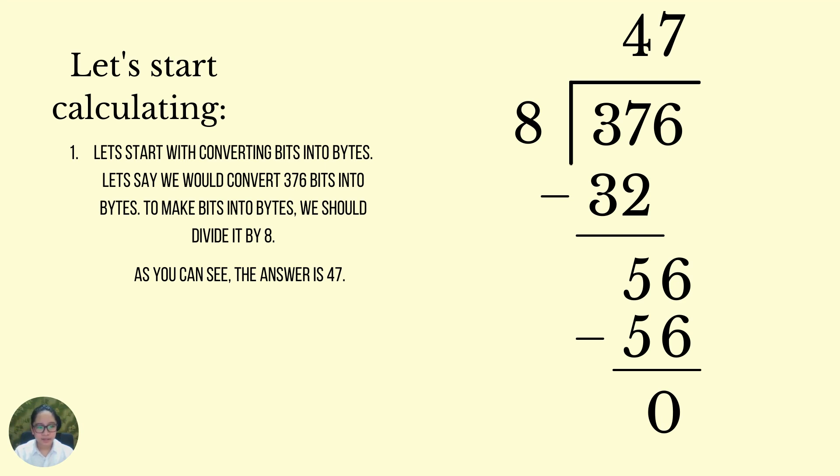Let's start calculating. Let's start with converting bits into bytes. Let's say we would convert 376 bits into bytes. To make bits into bytes, we should divide it by 8. As you can see here, 376 is here and the 8 right here.